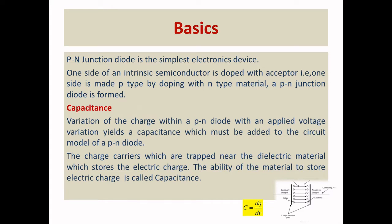We will start with the basics. When you take the structure of a p-n junction diode, one side is doped with the acceptor, that is p-type, and another side is doped with the n-type material. When you apply voltage to the p-n diode, there will be a variation of charge due to the applied voltage. This concept yields the concept of capacitance, which adds a capacitance effect in the diode.